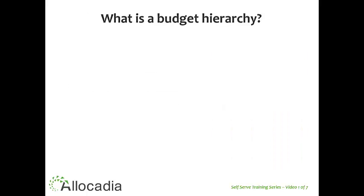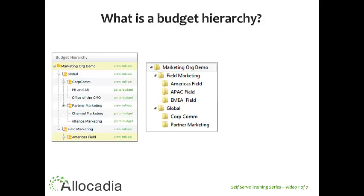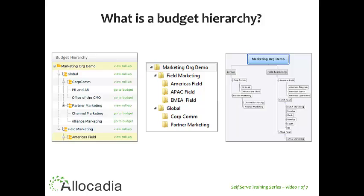What is a budget hierarchy? A budget hierarchy is an organizational structure of folders, subfolders, and budgets. When I think of the budget hierarchy, I think of folders on a computer network drive. Another way to think of the budget hierarchy is like an organizational chart of your marketing department.